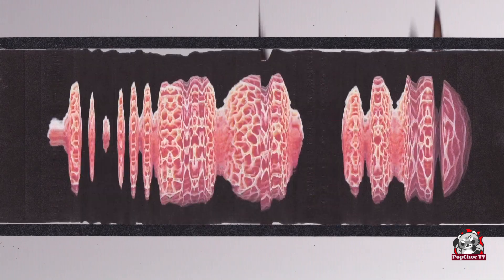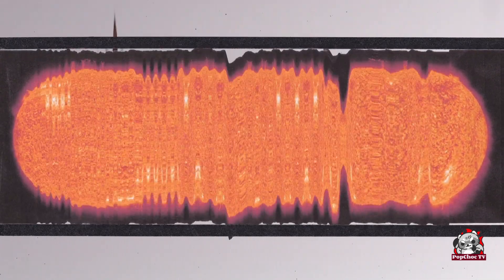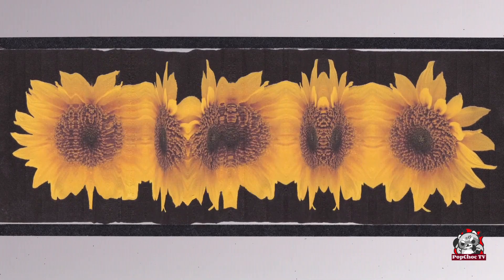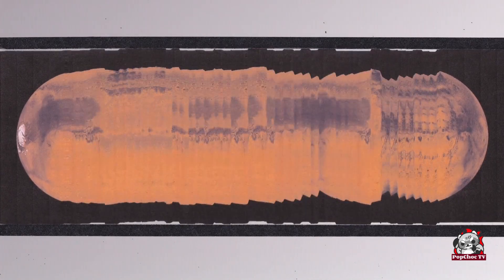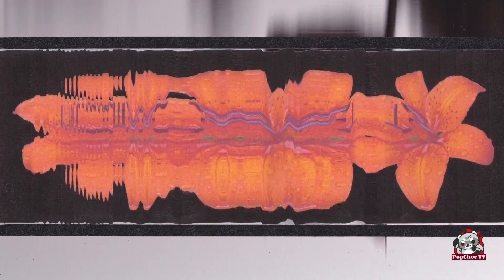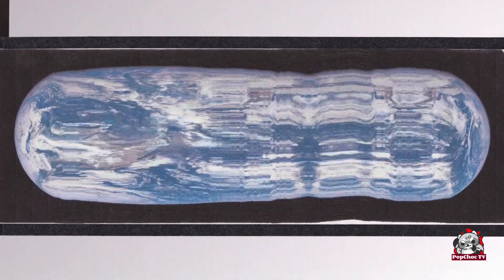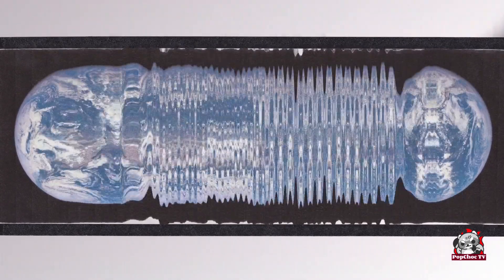Gravitational waves were detected using the LIGO and Virgo observatories, which use laser interferometry to measure the tiny distortions in spacetime caused by passing gravitational waves. This groundbreaking detection has allowed scientists to observe cosmic events such as neutron star collisions and has provided new insights into the early universe.